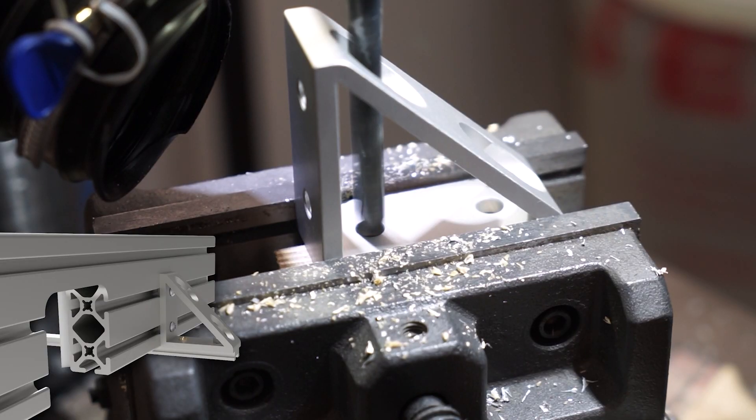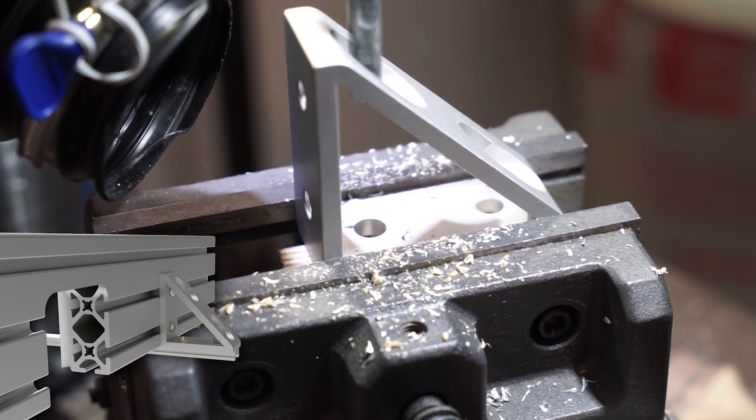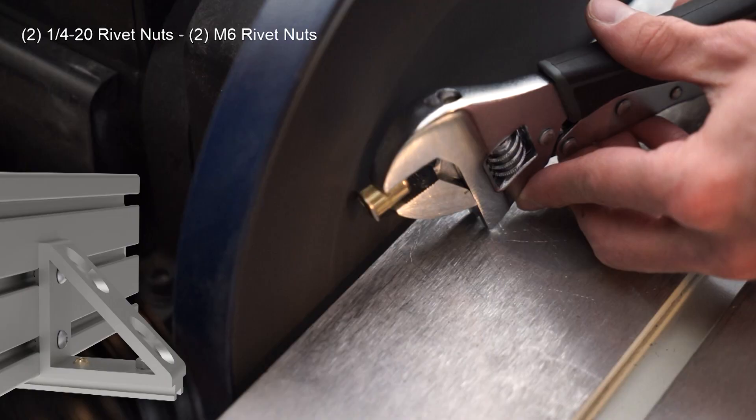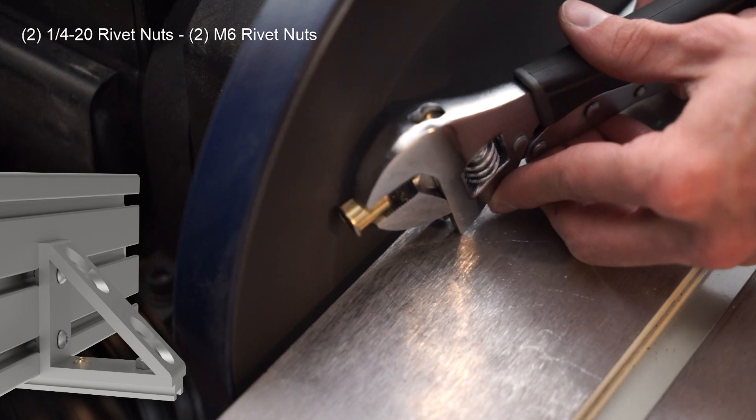One of the holes in the aluminum angle was bored out to accept a rivet nut. This will form the base of the locking mechanism. The rivet nuts were ground down on either side. We'll get to why that happened in just a few moments.